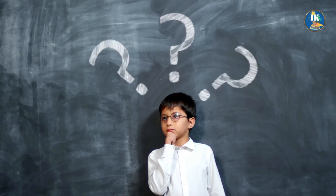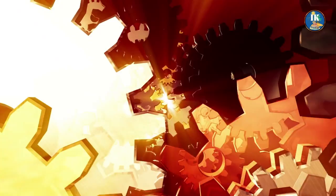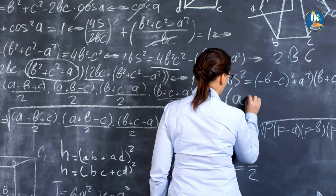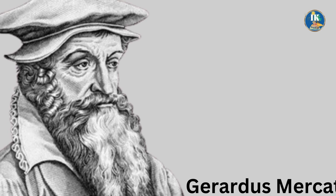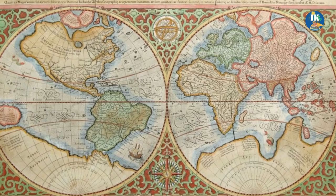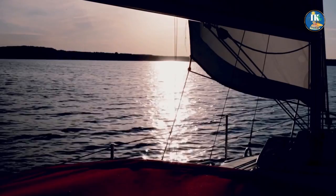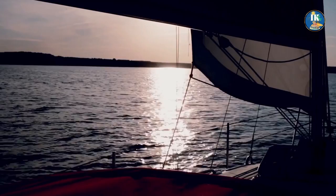You might be wondering: if the Mercator projection is so distorted, why do we still use it? The answer is actually quite complex. For one thing, the Mercator projection has a long and fascinating history. When it was first developed by Gerardus Mercator in the 16th century, it revolutionized the way we saw the world. It allowed sailors to navigate the oceans more accurately by creating a straight line between two points on the map that represented the shortest distance between them.